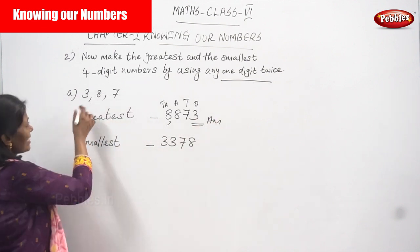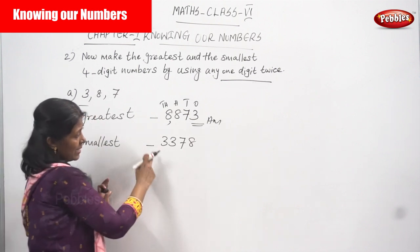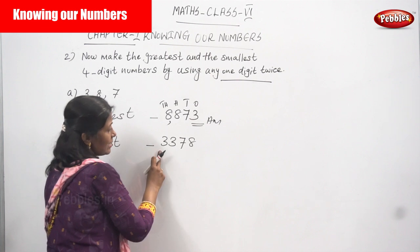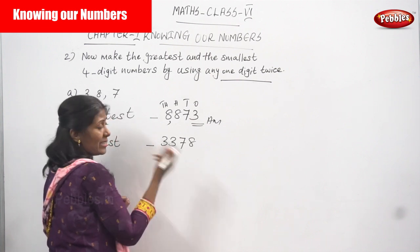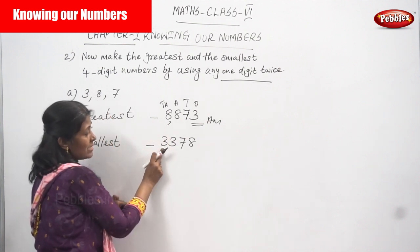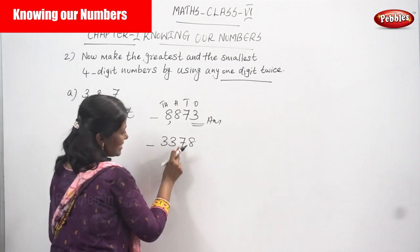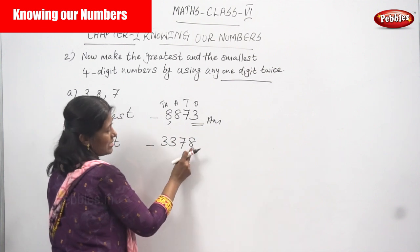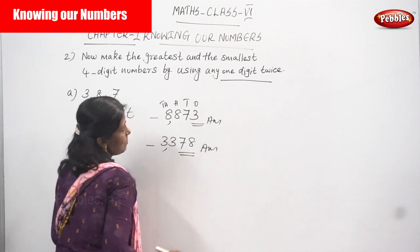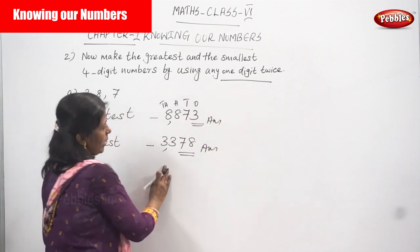For the smallest number, the least digit is 3. I use 3 twice, then the next greater number 7, and finally the greatest number 8. So the smallest number is 3378 — three thousand three hundred and seventy-eight. The condition of using any one digit twice is also applied here.